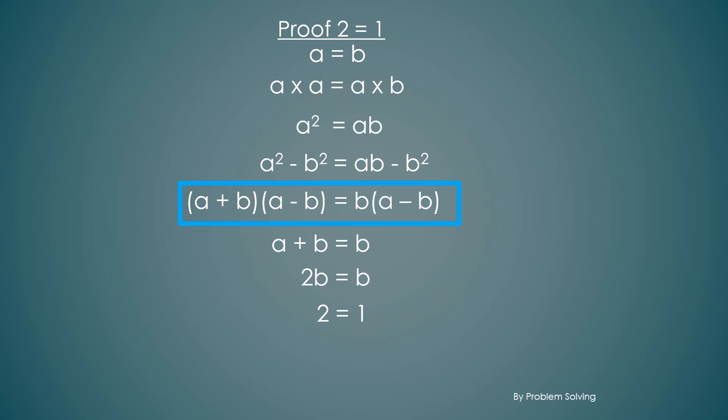When we divided it, we know that a is equal to b. So we're dividing a minus b which is 0. So what this equation says is a plus b times 0 is equal to b times 0 and we're cutting out the zeros which is mathematically wrong.